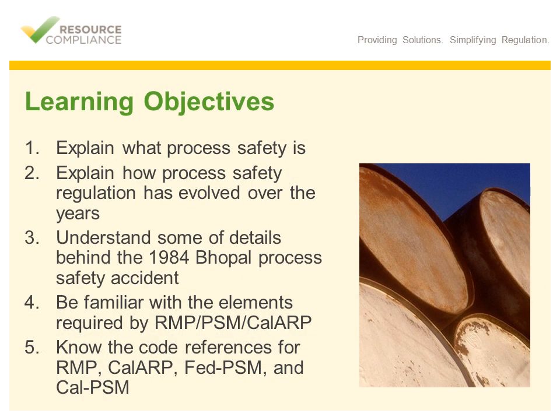There are several learning objectives to keep in mind throughout this training. Upon completion, you should: one, be able to explain what process safety is; two, be able to explain how process safety regulation has evolved over the years; three, understand some of the details behind the 1984 Bhopal Process Safety accident; four, be familiar with the elements required by RMP, PSM, and CalARP; five, know the code references for RMP, CalARP, Federal PSM, and California PSM.